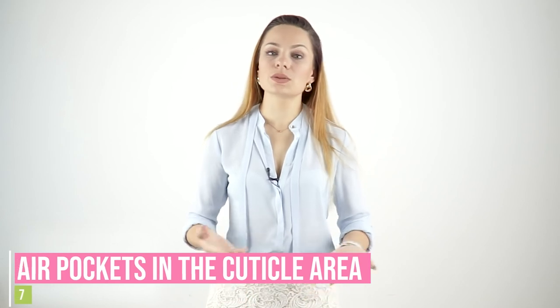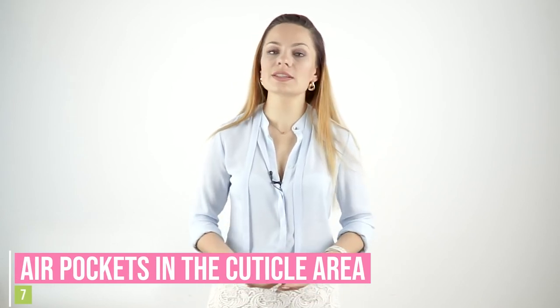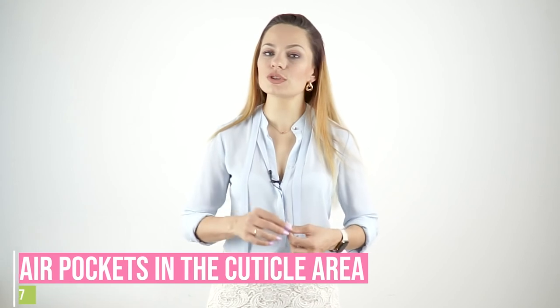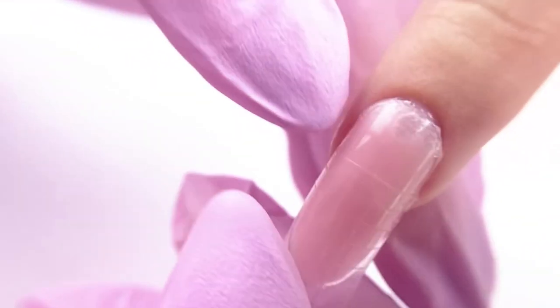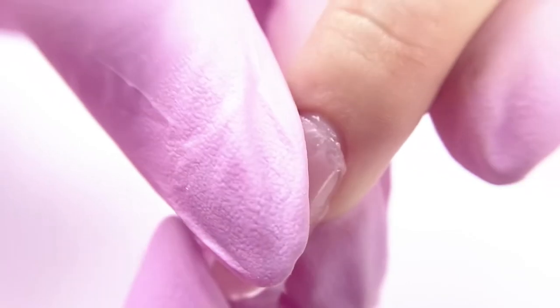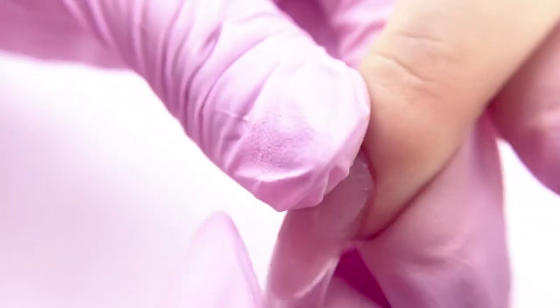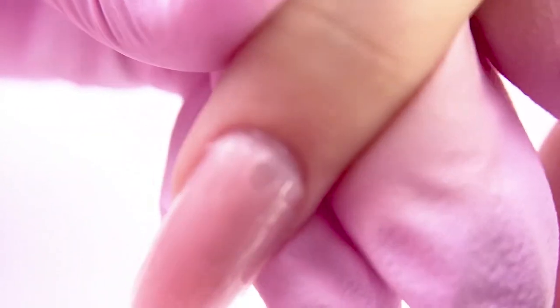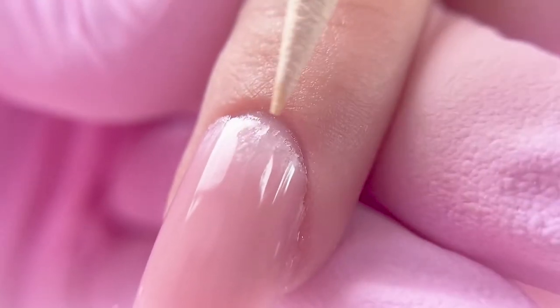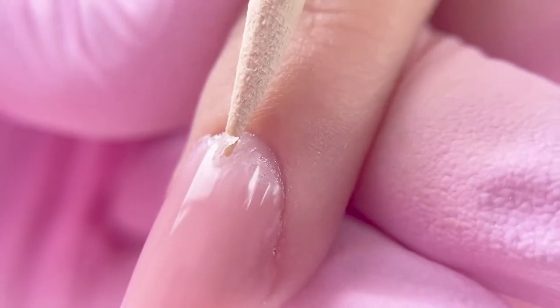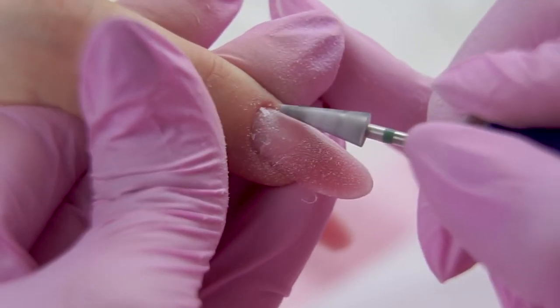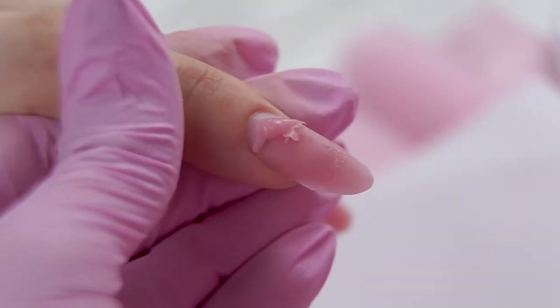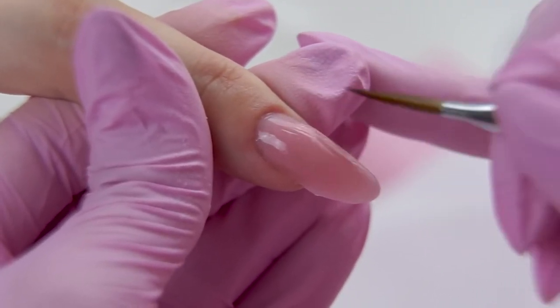The seventh point, air pockets in the cuticle area. They often occur cause we put pressure on the form's tip and it lifts up. This problem can also occur if the form does not fit the transverse arch. For example, you've taken a flat form for the arched nails. And vice versa, you have chosen a two-arched form for the flat ones. The air pockets appear. If you do see the air pockets in the cuticle area, then file them out with a carbide drill bit. Then fill this place with a small drop of Acrygel using the brush.